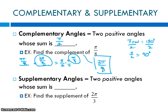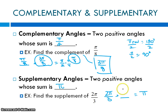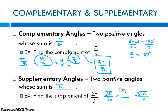Supplementary means two positive angles whose sum is 180 degrees, or equivalently π radians. One angle is 2π/3. What plus 2π/3 equals π? Think of it as: 2 thirds plus how many thirds gives 3 thirds? Because 3π/3 equals π. So 2π/3 plus π/3 gives 3π/3, which is π. The supplement of 2π/3 is π/3.